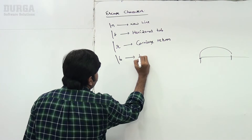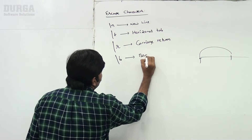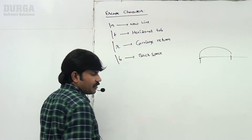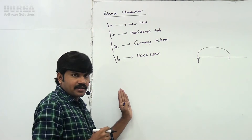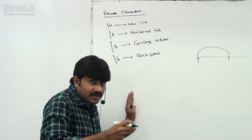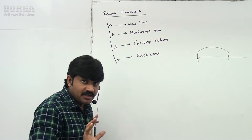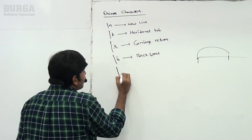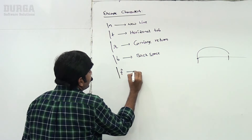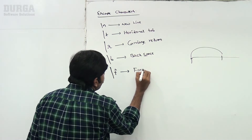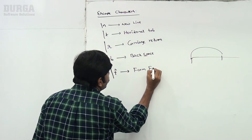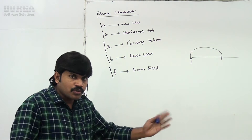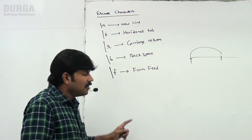Backslash b means backspace — automatically the current character goes back, so that character will be deleted. Backslash f means form feed, which means go to the next page.